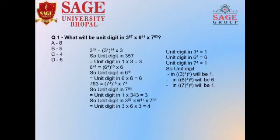This is question number 1. What will be the unit digit in 3 to the power 57, into 6 to the power 41, into 7 to the power 66? So we will start.